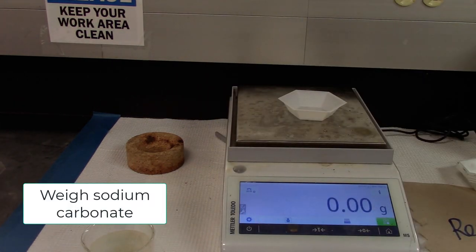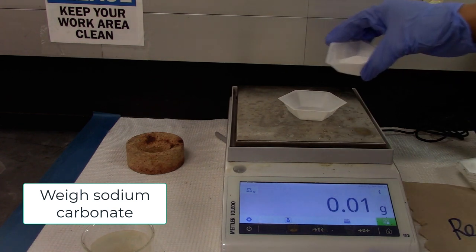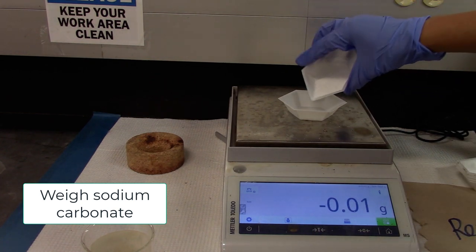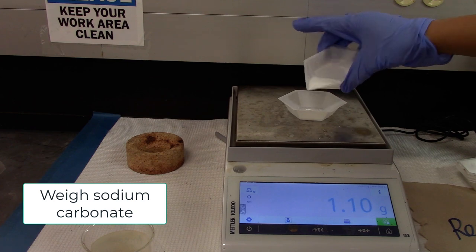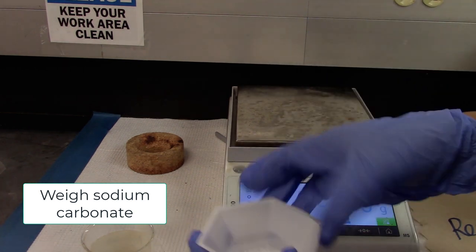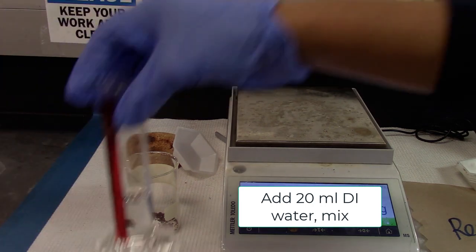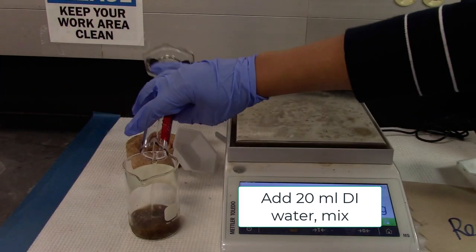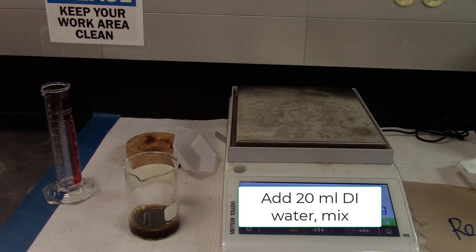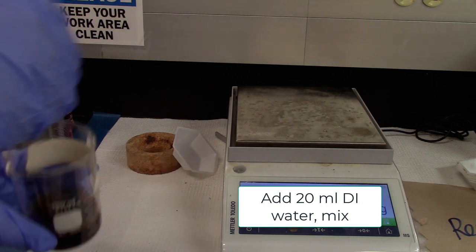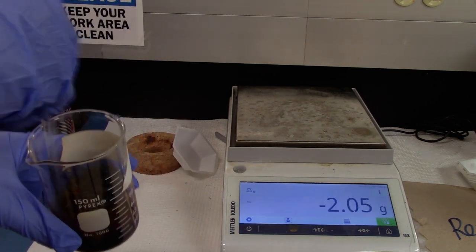We would add about 1 gram of sodium carbonate to this instant coffee and add 20 mls of DI water. Use a glass stirring rod to mix it.